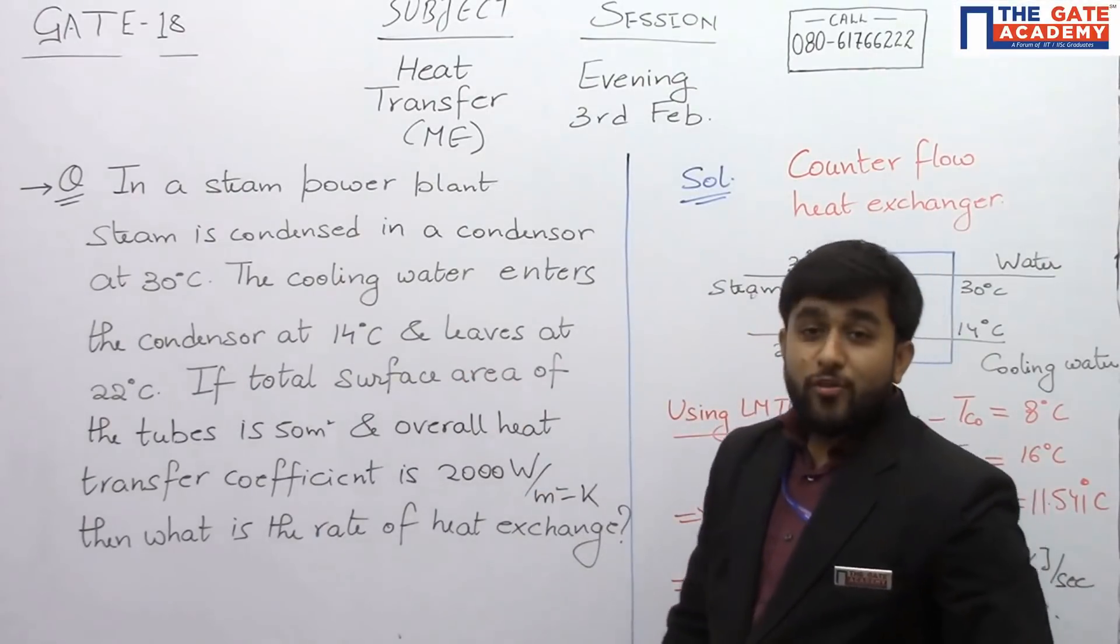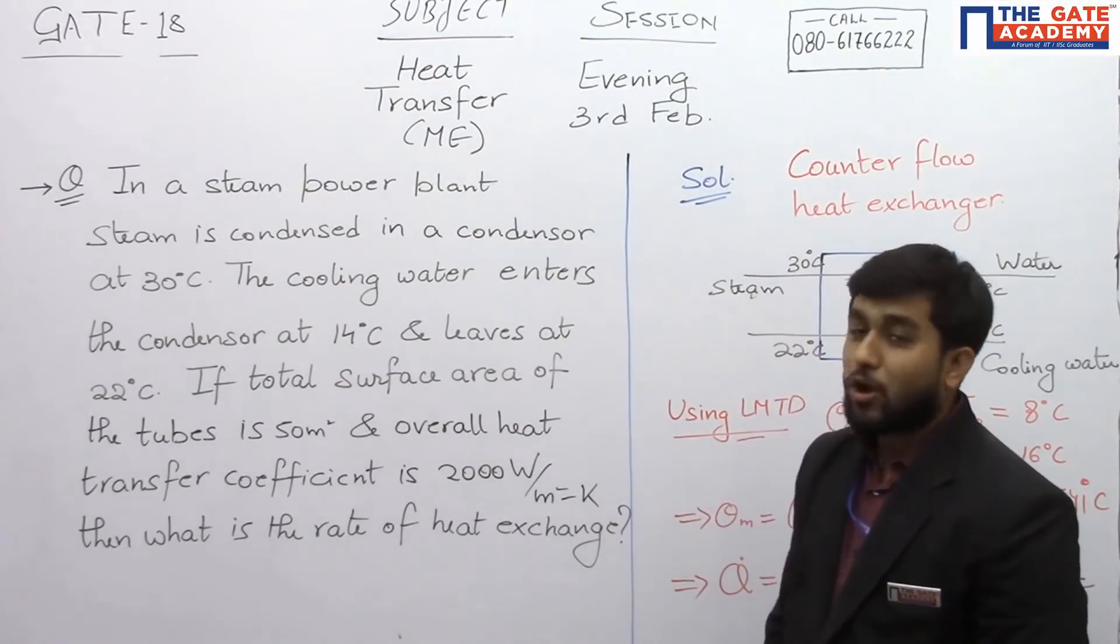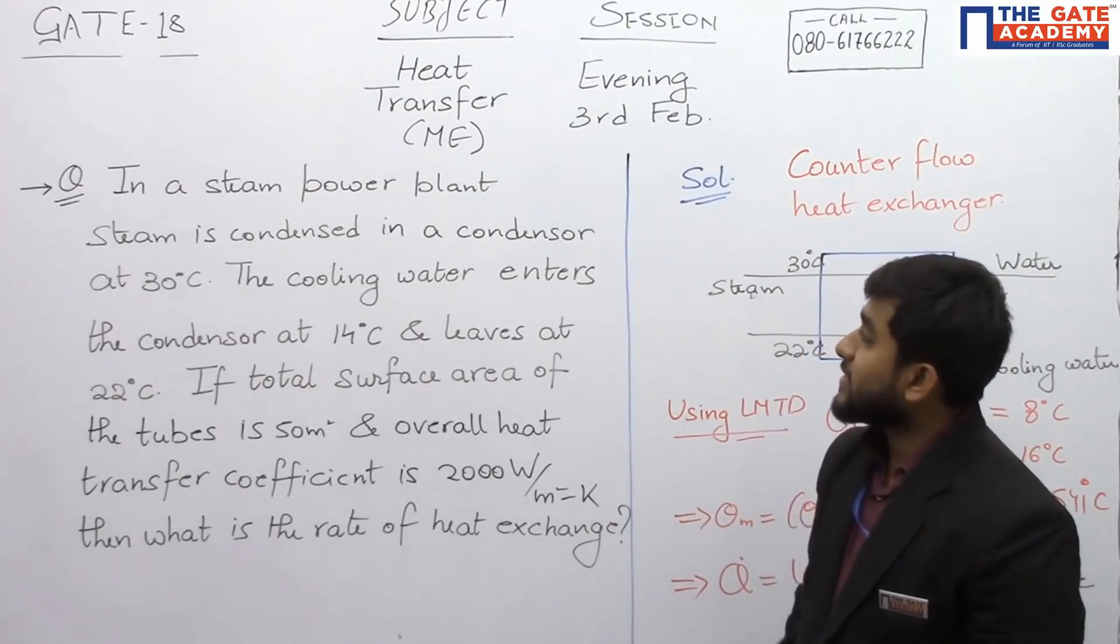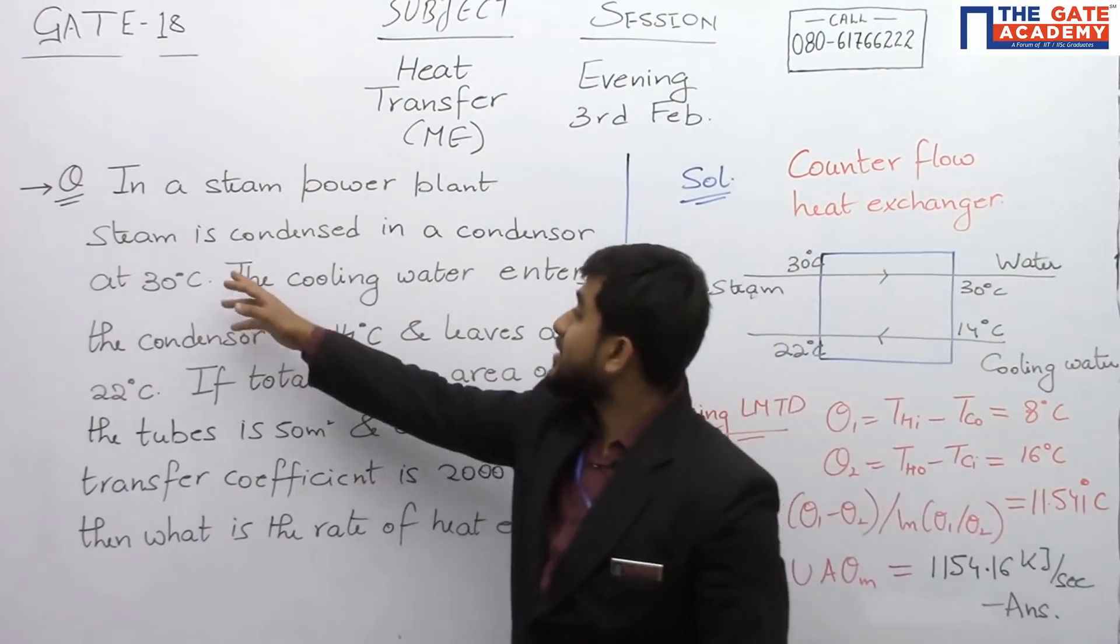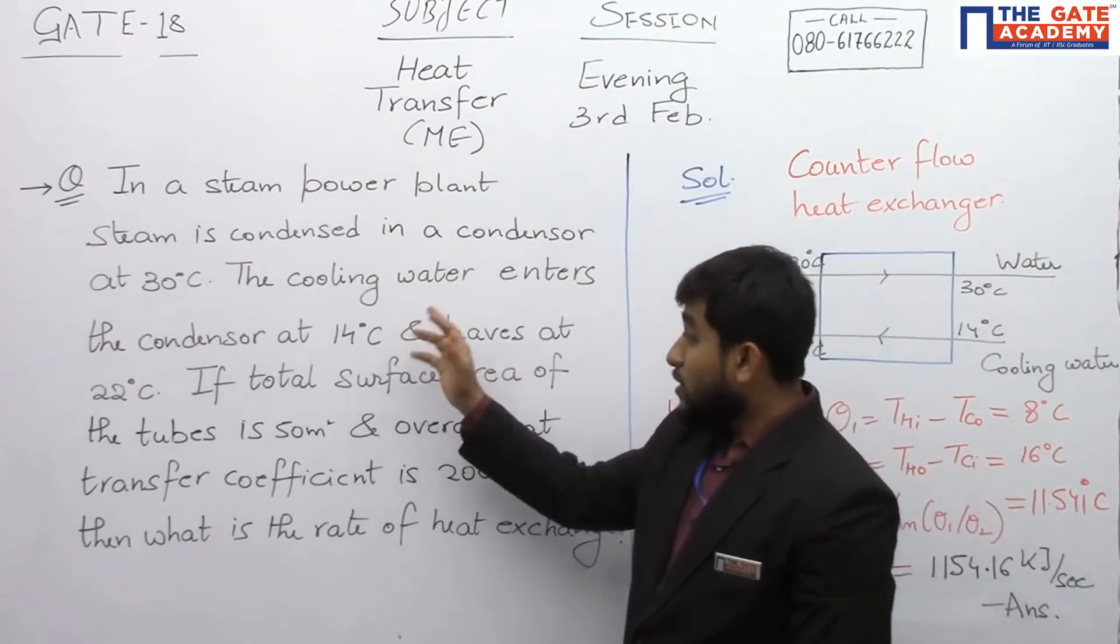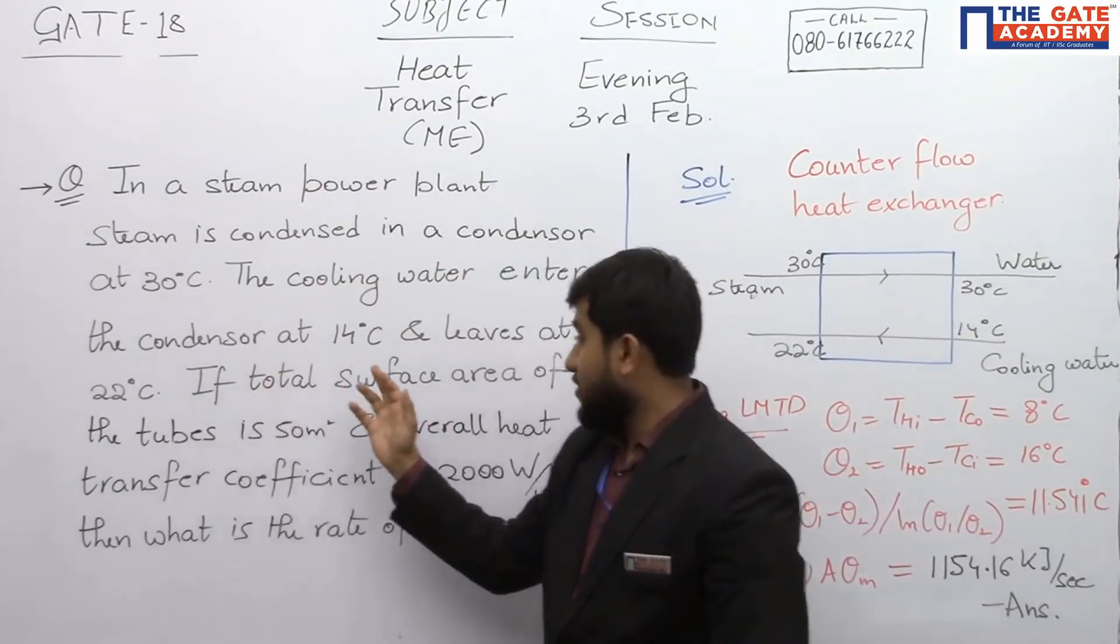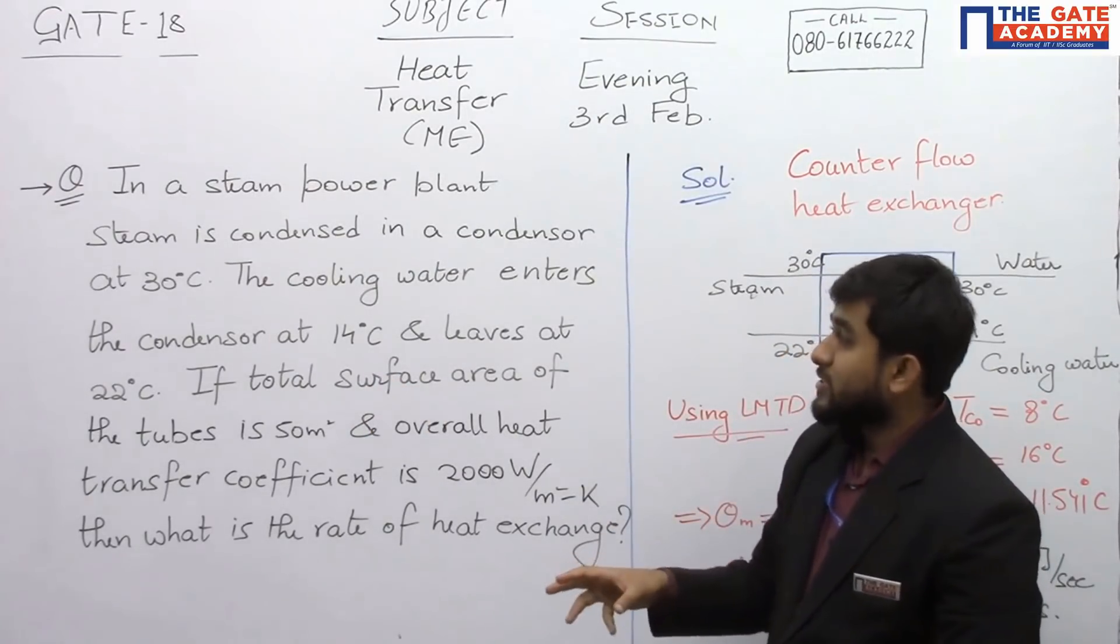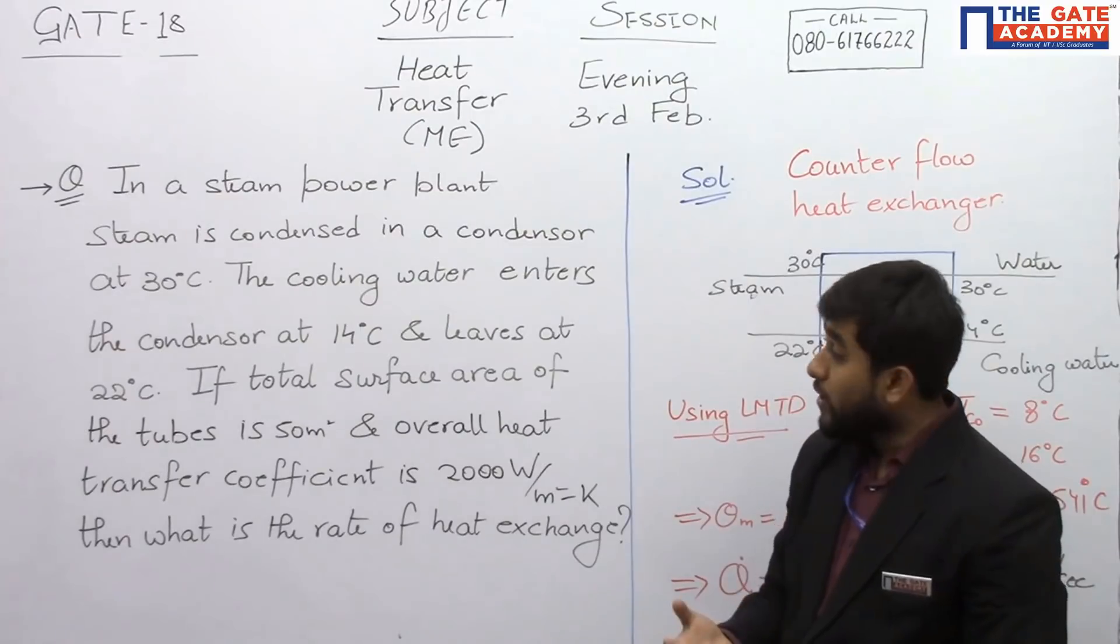This is the second question from heat transfer subject belonging to GATE 2018 evening session. The question says: In a steam power plant, the steam is condensed in a condenser at 30 degrees Celsius. The cooling water enters the condenser at 40 degrees Celsius and leaves at 22 degrees Celsius. Basically, the inlet and outlet temperature of both the hot fluid and the cold fluid are given to you.